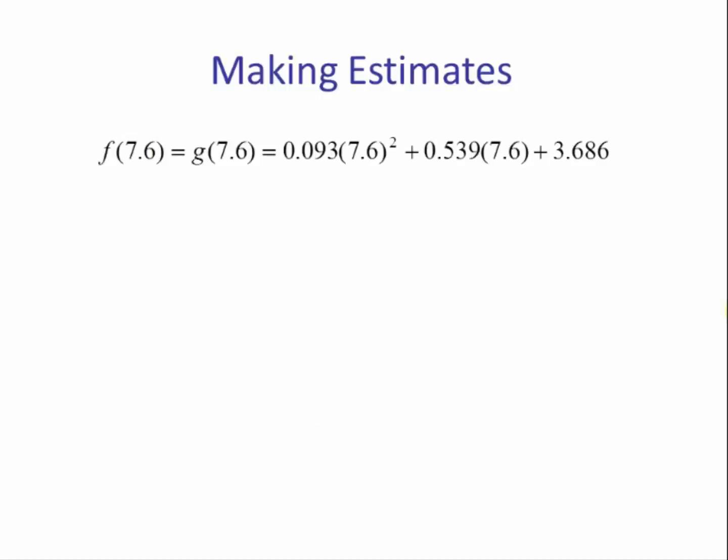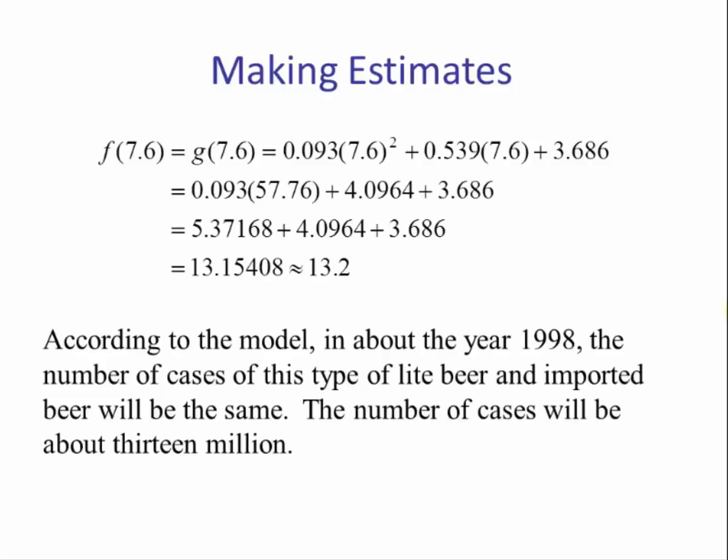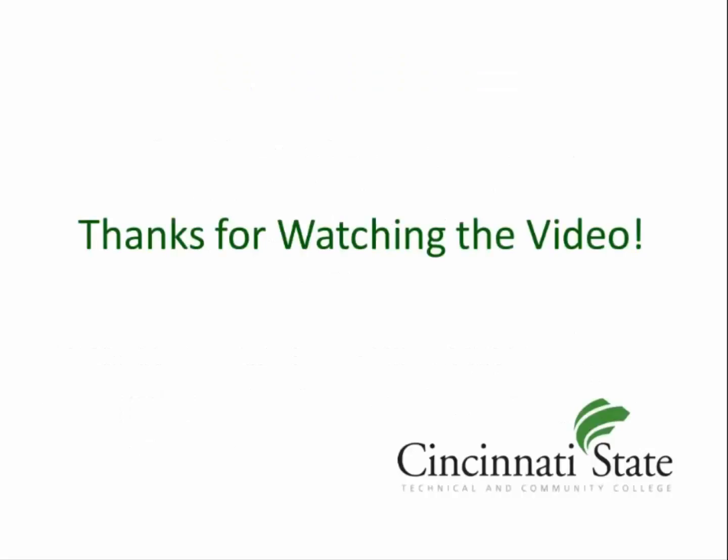For the next time, 7.6, we substitute that back into one of the models, do the arithmetic, and we have an output of about 13.2. So we would say, according to the model, in about the year 1998, the number of cases of this type of light beer and imported beer will be the same. The number of cases will be about thirteen million. Thanks for watching.